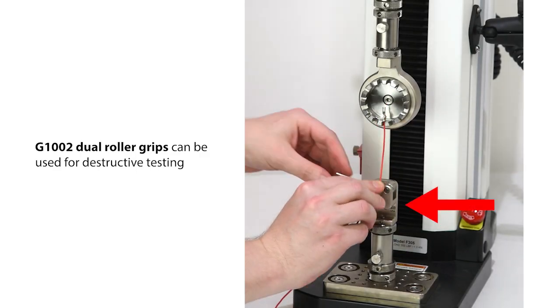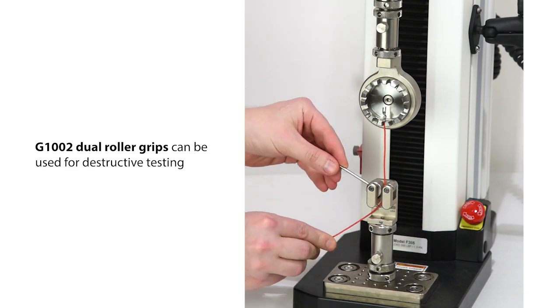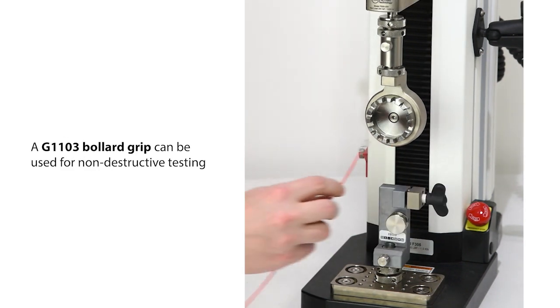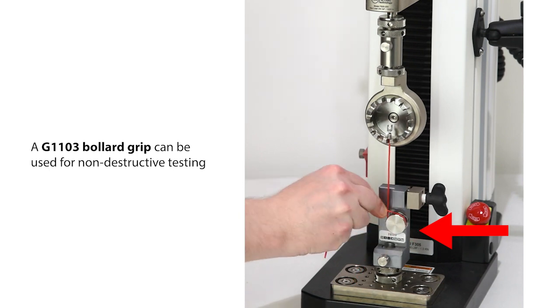G1002 dual roller grips can be used for destructive testing. A G1103 bollard grip can be used for non-destructive testing.